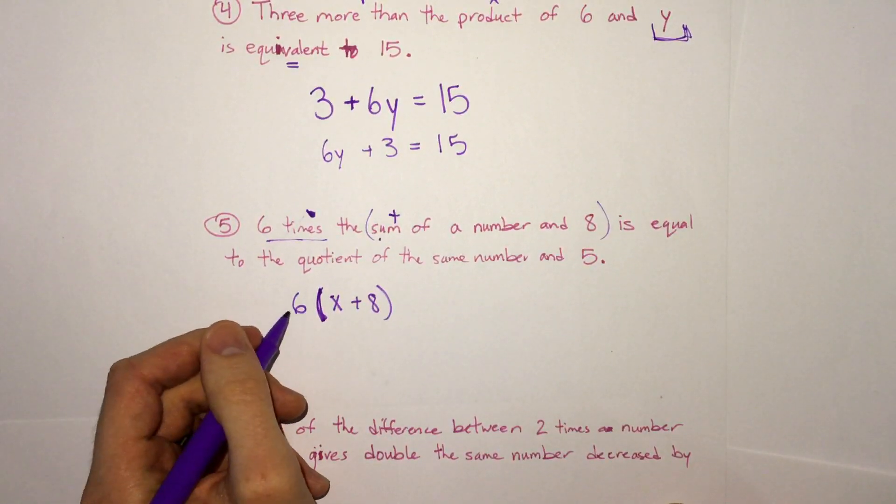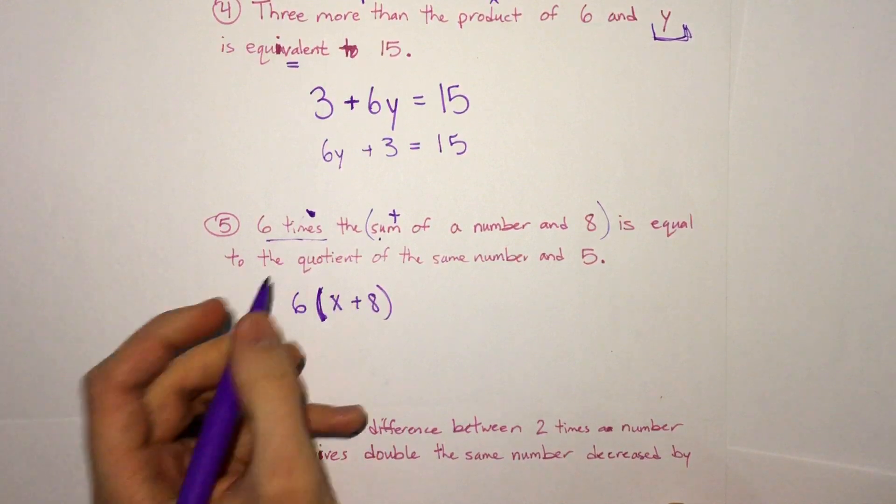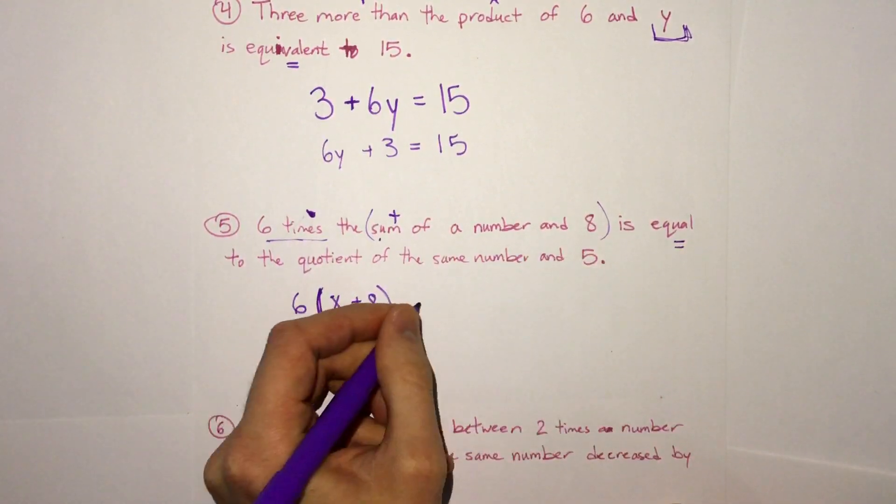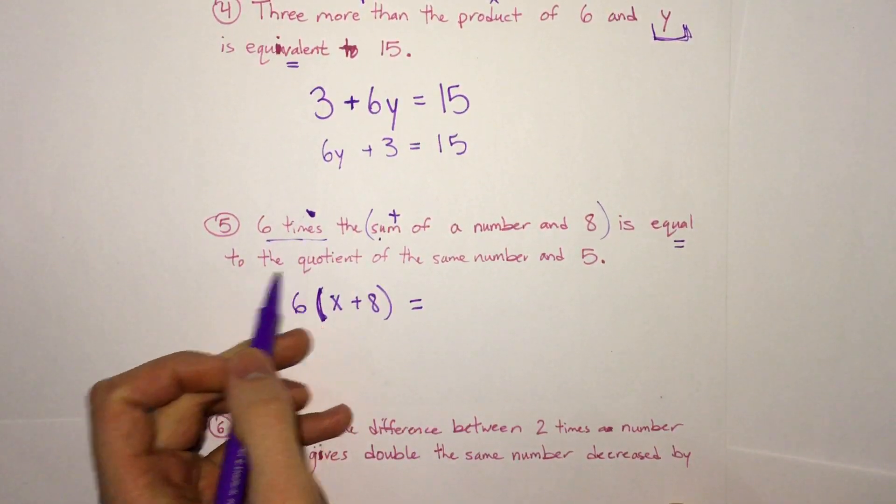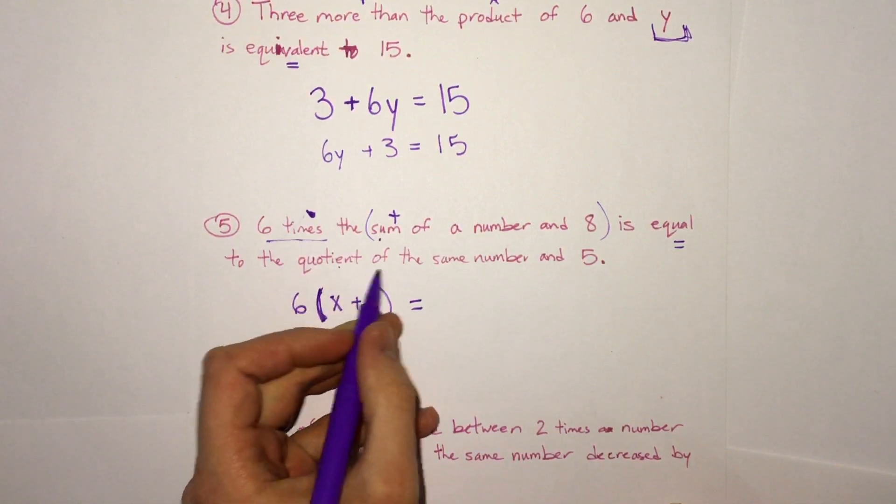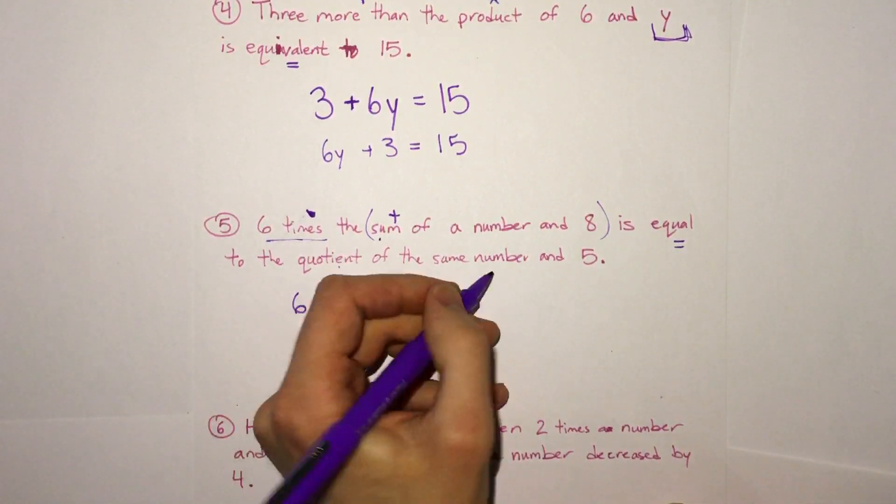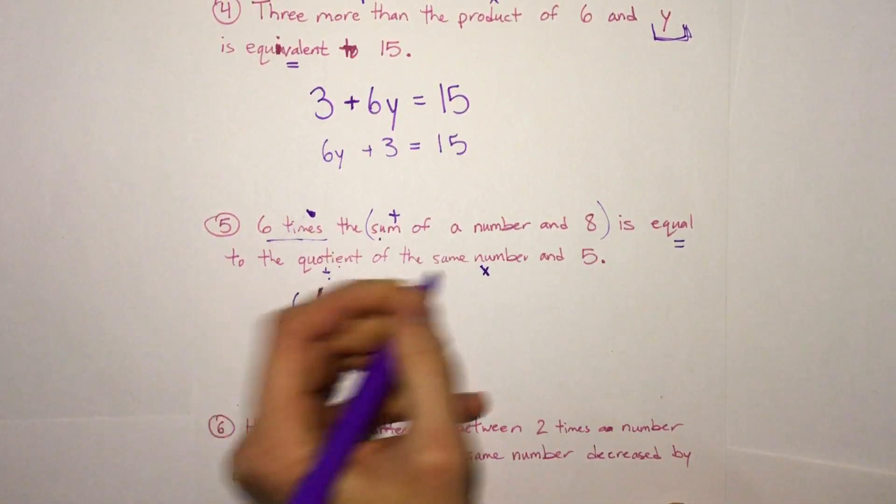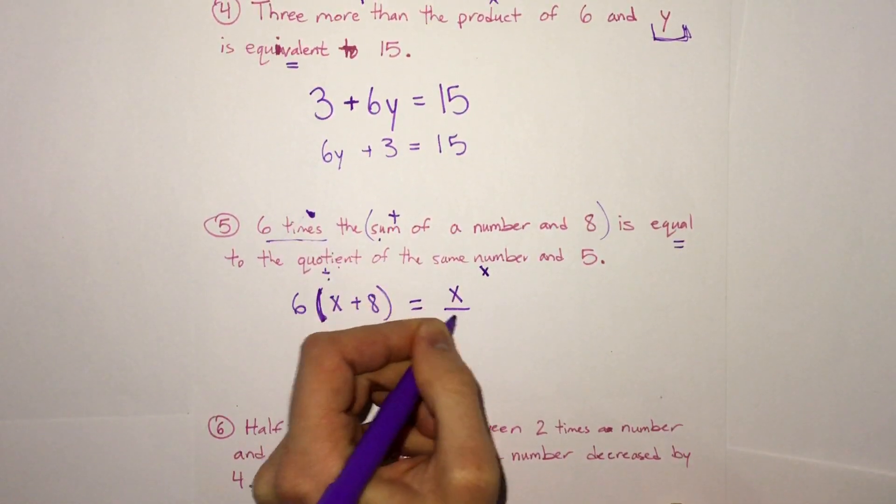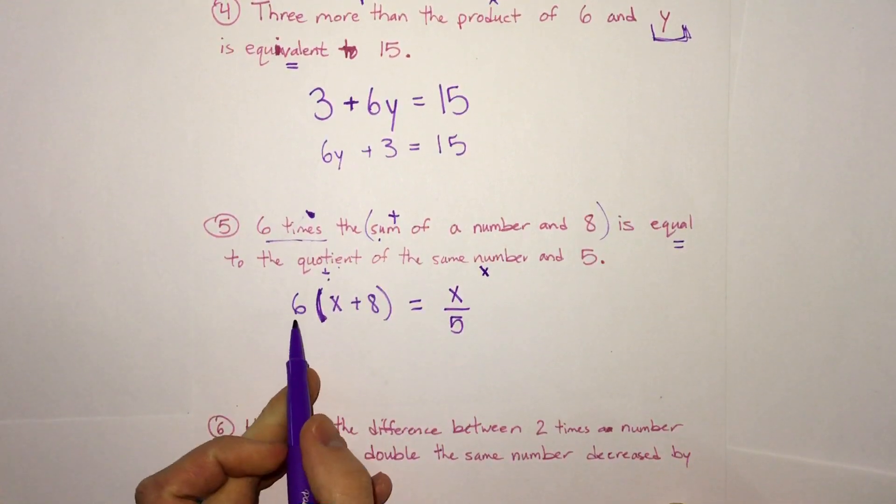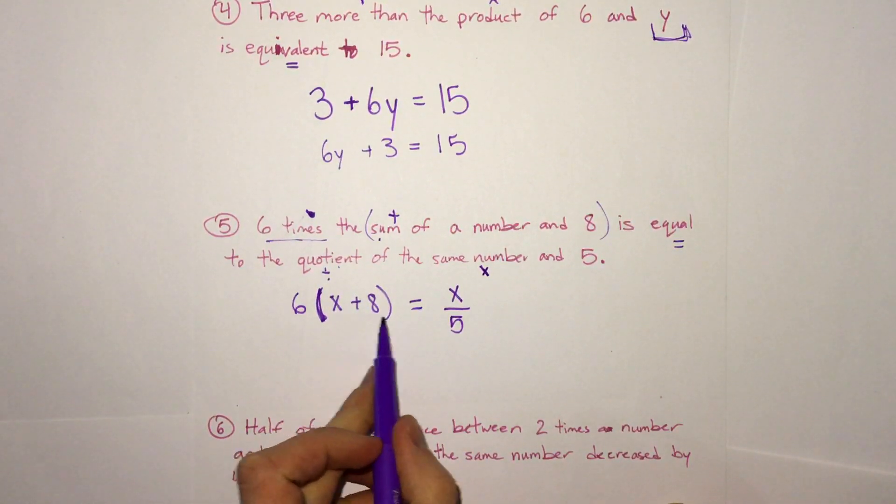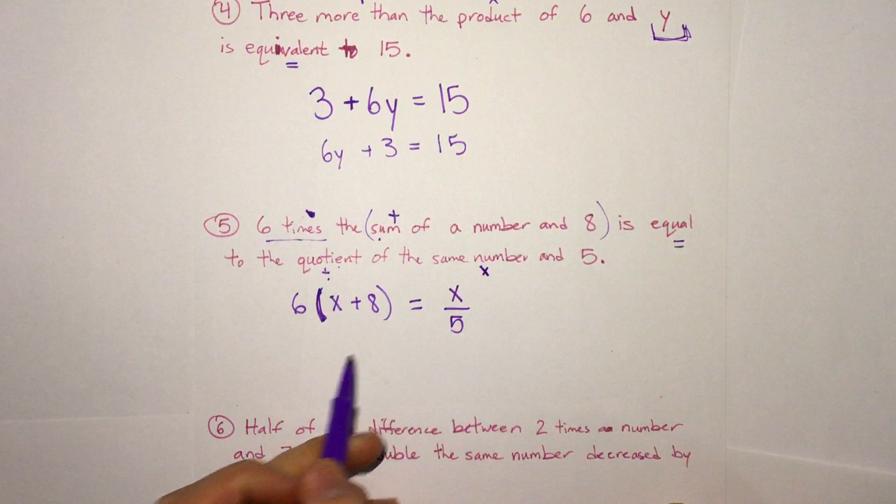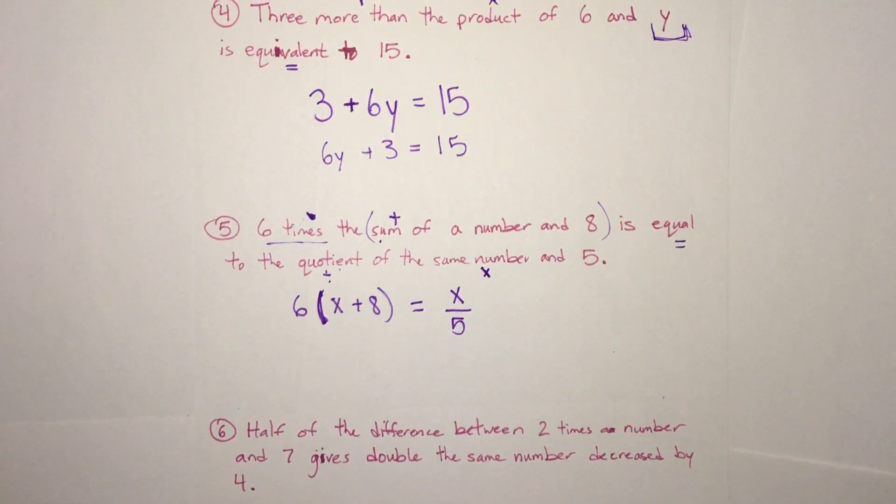And if we do that, we have six times x plus eight is equal to, but now there's more on the other side, the quotient of the same number and five. So if we're talking about the same number, we mean x and a quotient is division. So we're doing x divided by five. So this is saying six times x plus eight equals x over five. And that would be our equation there.